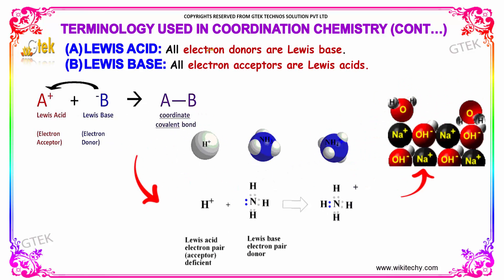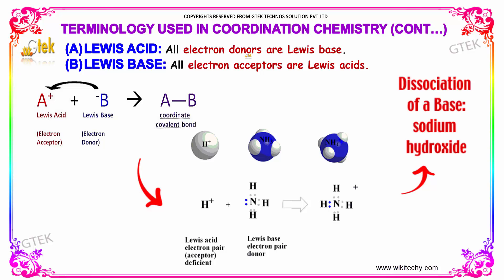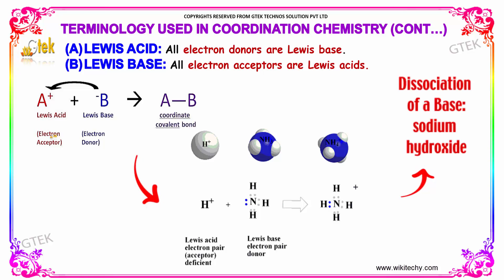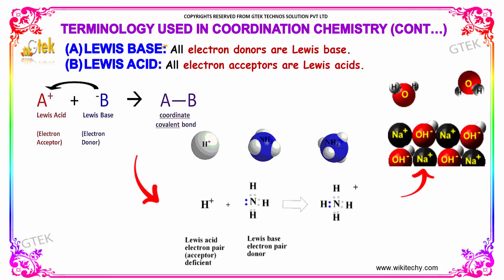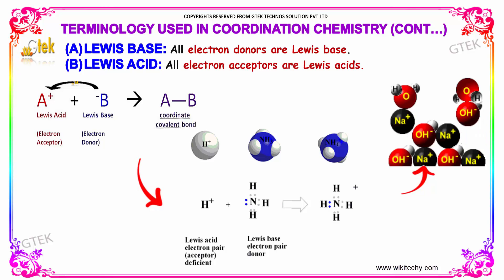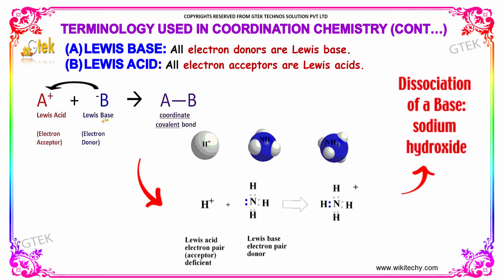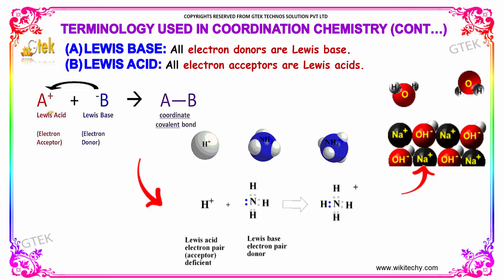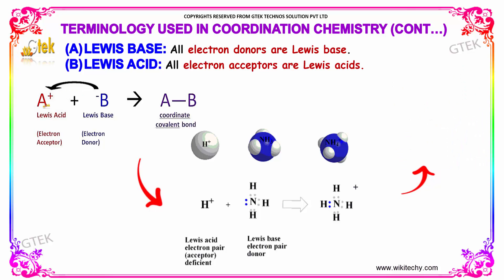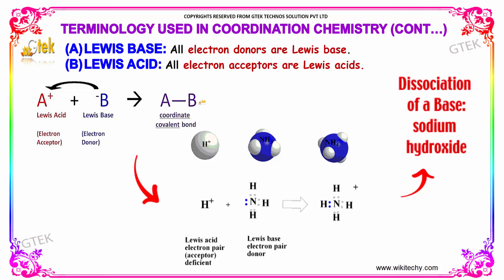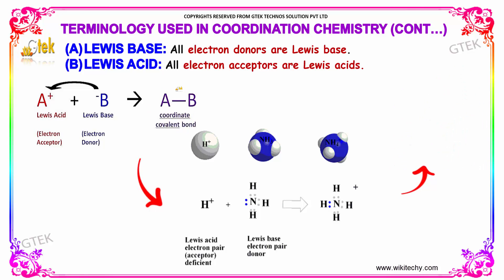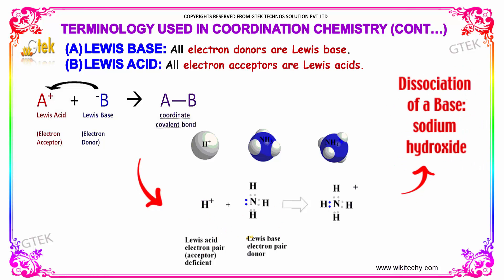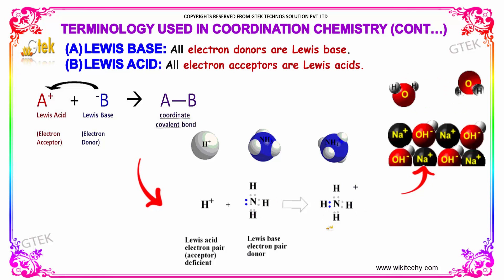What is Lewis acid? All electron donors are considered as Lewis base, and the one who is accepting everything — electron acceptors — are called as Lewis acid. The combination of Lewis acid and Lewis base will provide you a coordinate covalent bond. H-plus is an acceptor which is deficient, Lewis base is an electron pair donor, and this forms a coordination compound.